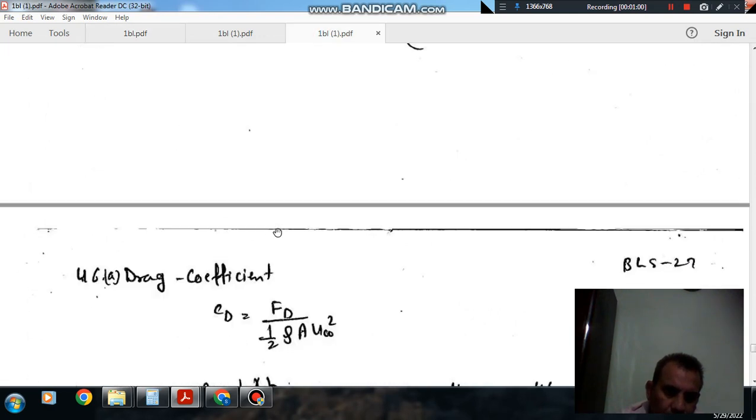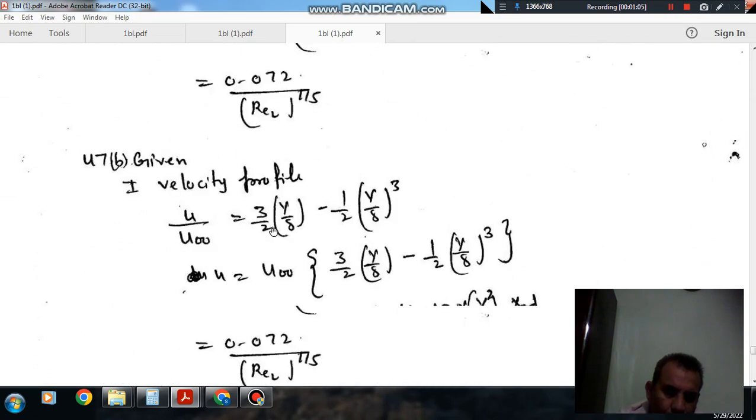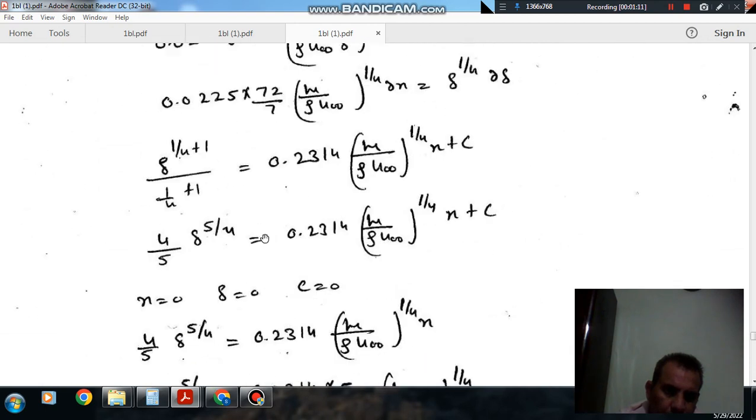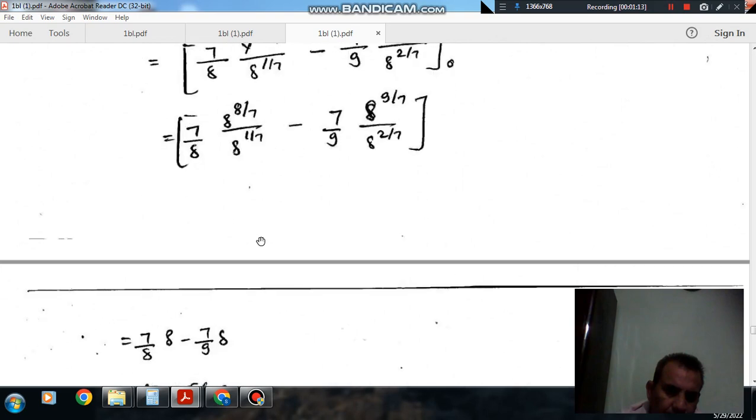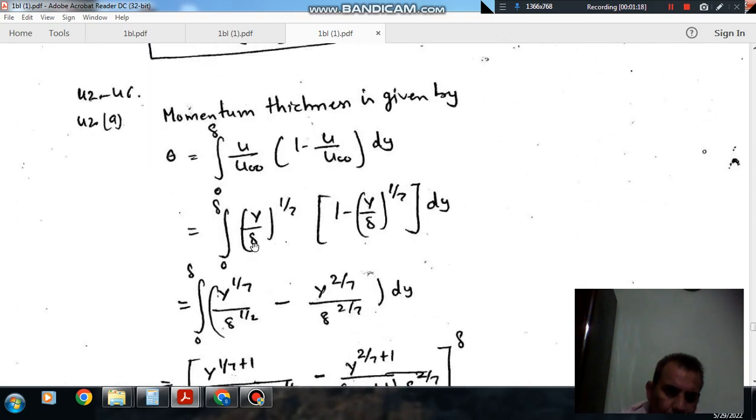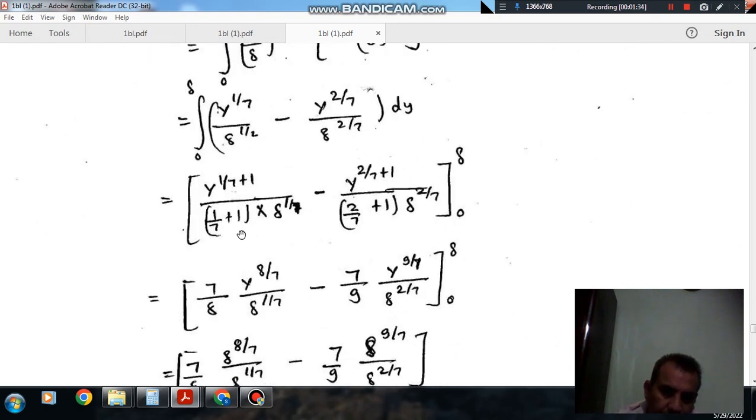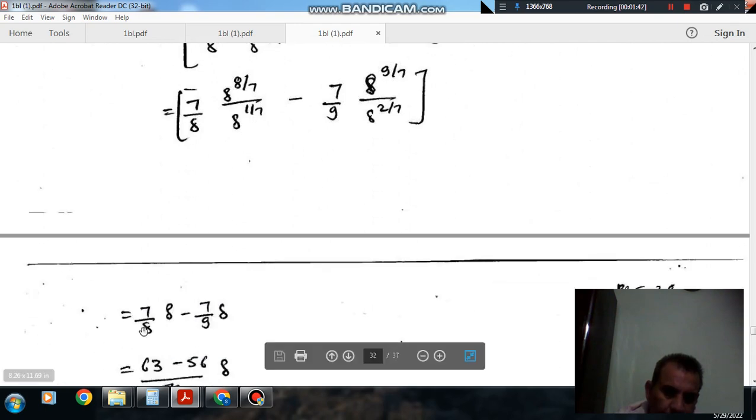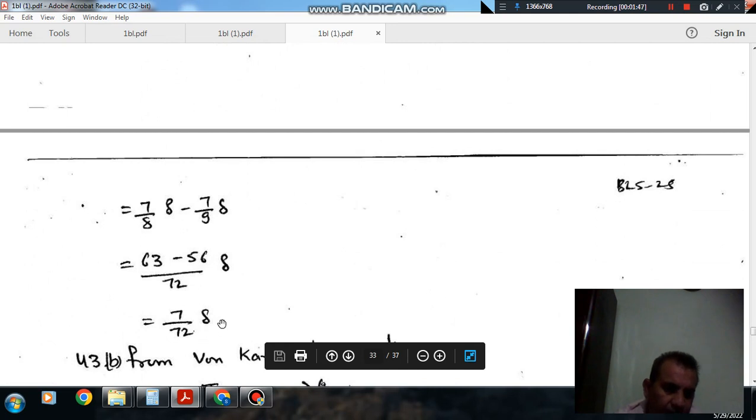Here the velocity profile is given by u/u_0 equals (y/delta) raised power 1 by 7. So momentum thickness is integral of (u/u_infinity)(1 - u/u_infinity)dy. Putting the values and then integrating, then putting the limits, we get momentum thickness as 7 by 72 delta.